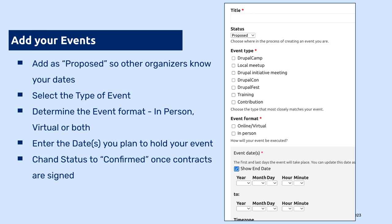Anybody here can add their events. It's important to put your events here — whatever type of event it might be — so people in the community who you might not have on your email list can find them. They come to Drupal.org most likely, so put your events there and they'll be able to find them. Maybe they come to a meetup and that's how they first get introduced to Drupal. Once they find out what a great community this is, they'll stay.